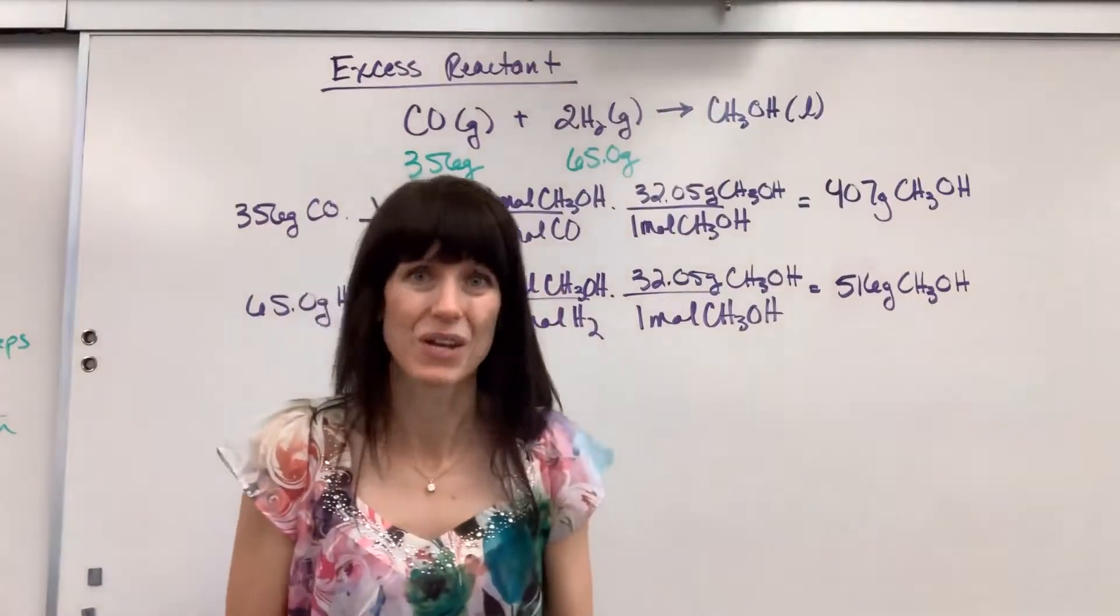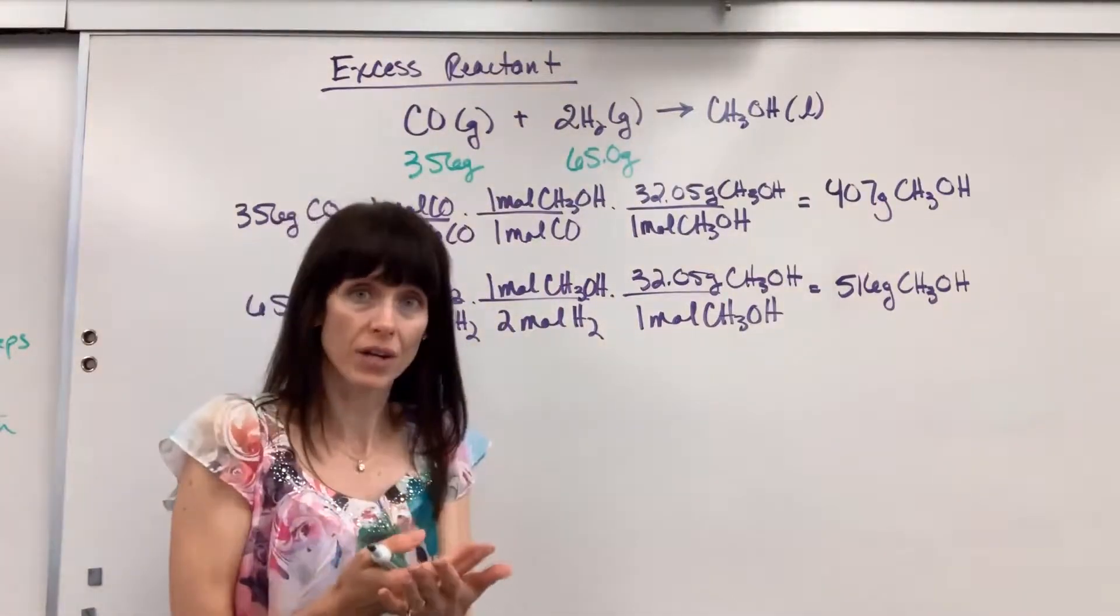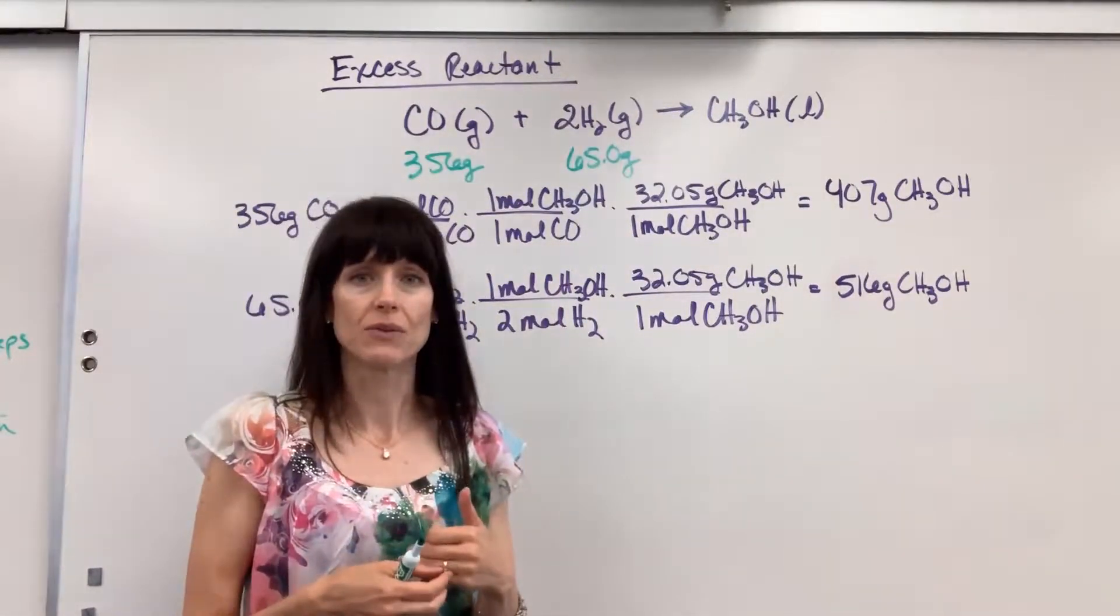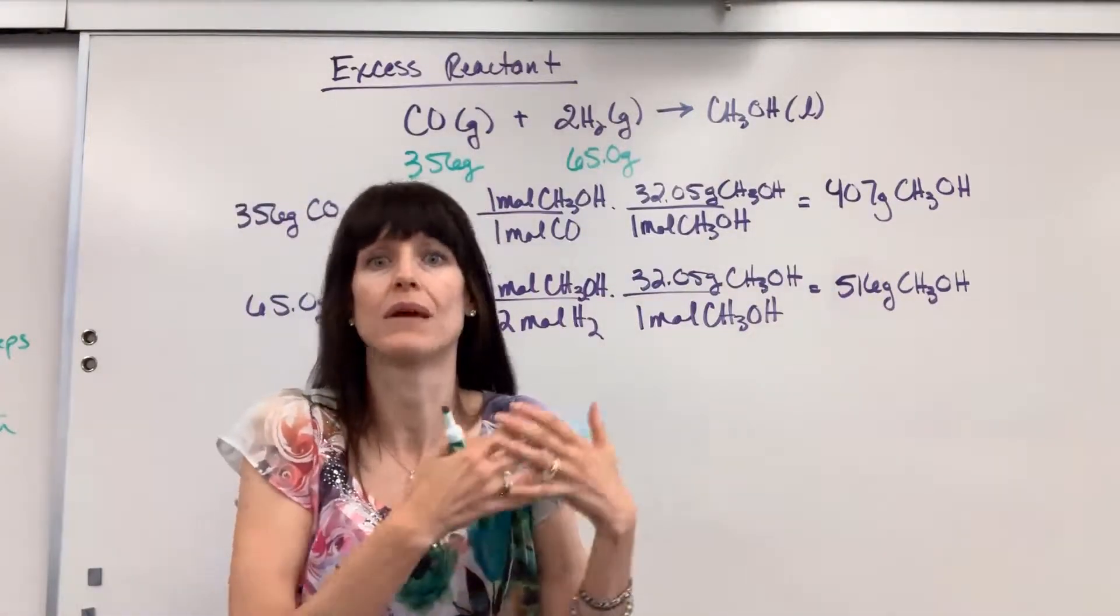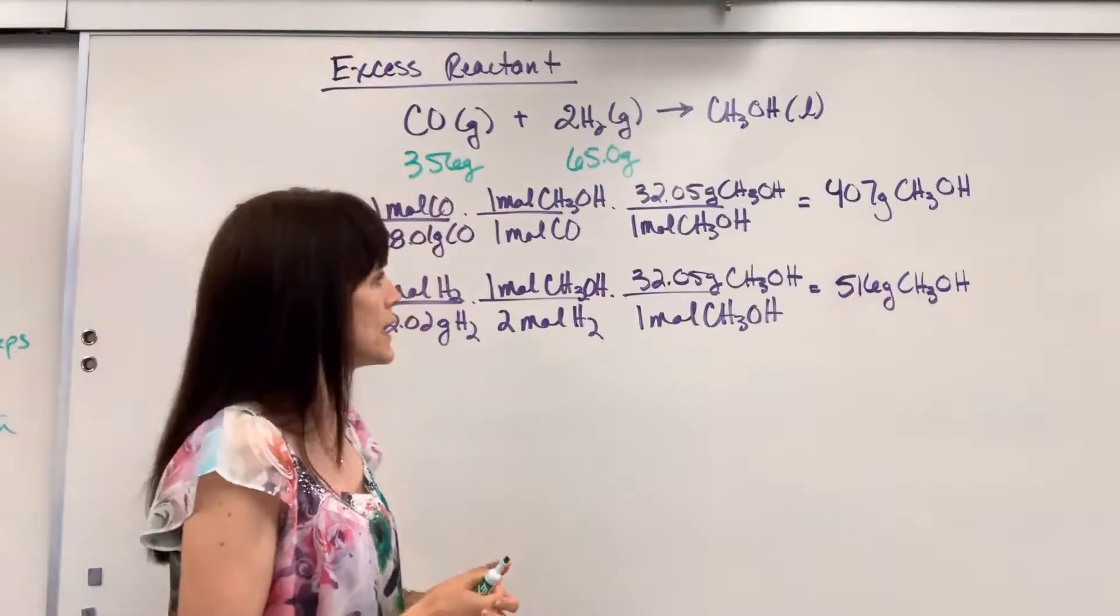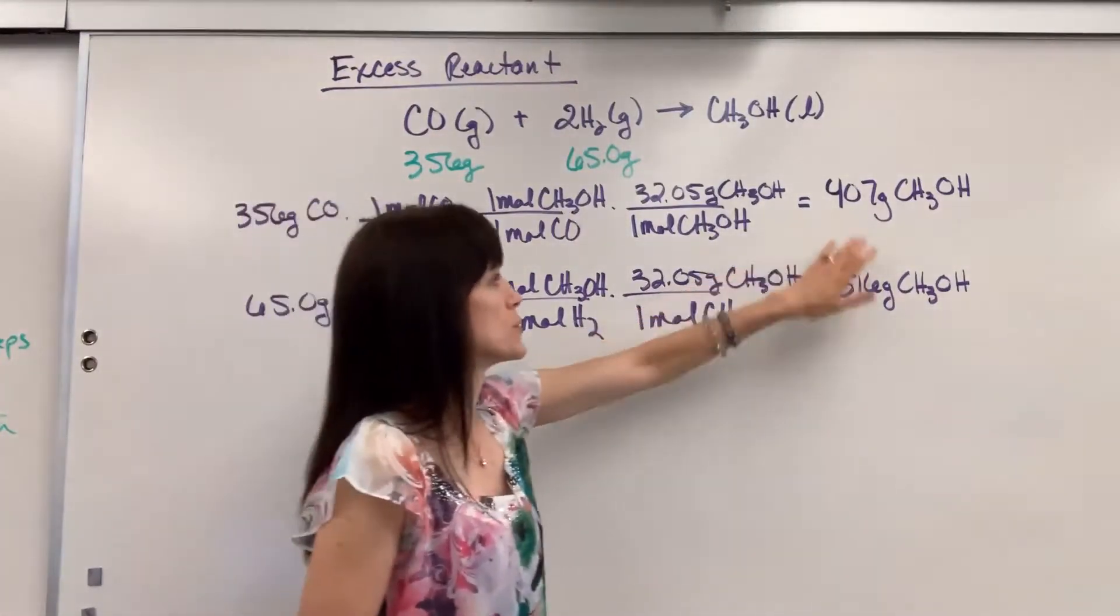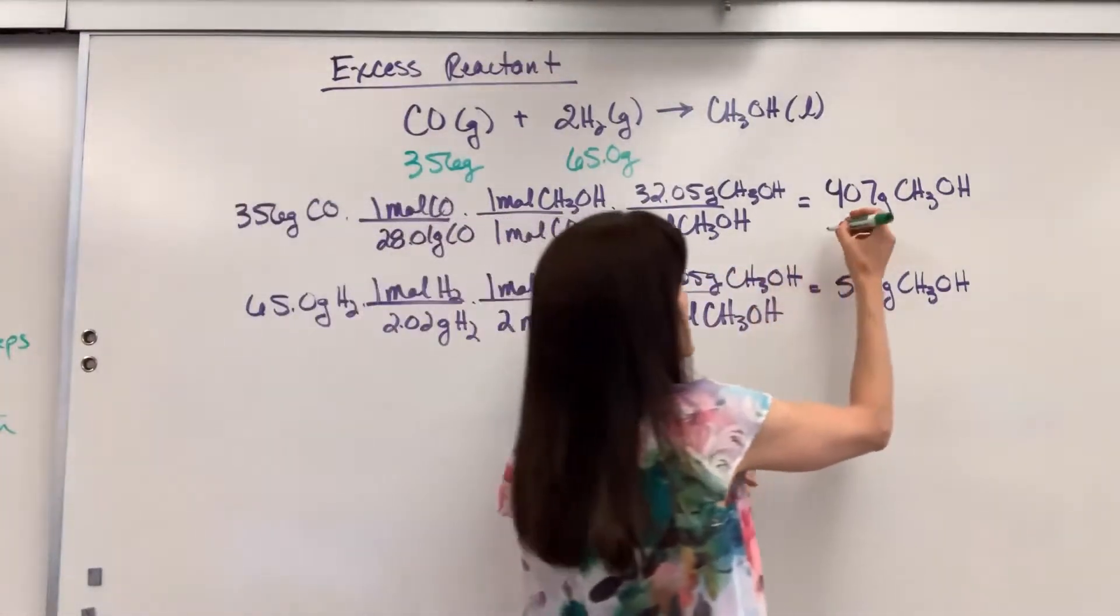All right, now you look at it. Whichever number is smaller is going to come from the limiting reactant, just like the sugar. I only had four cups of sugar. I could only make one batch of cookies. Which one's smaller? This one right here.